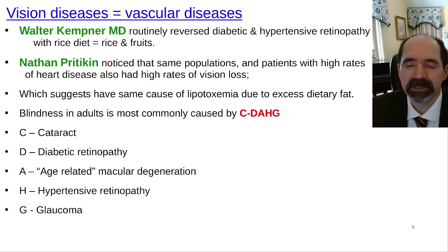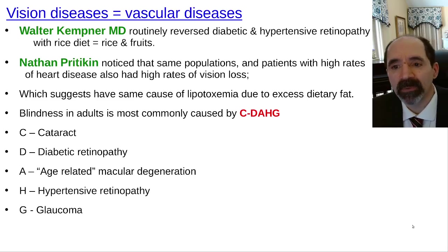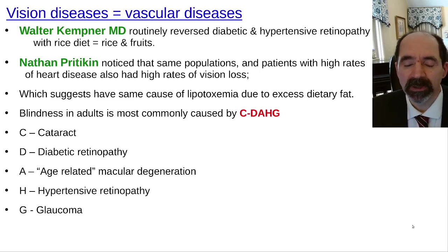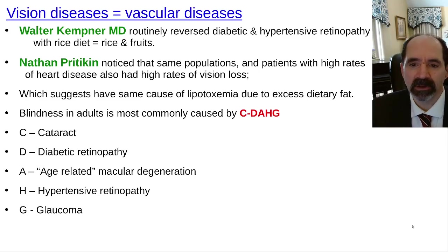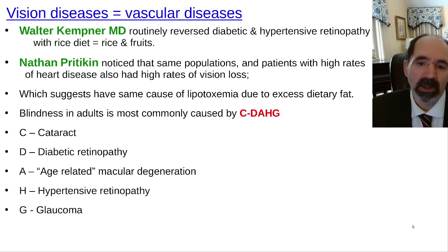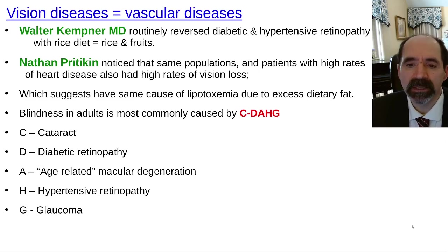Nathan Pritikin noticed that the same populations with high rates of heart disease also had high rates of vision loss. He felt this was primarily due to lipotoxemia — high dietary fat causing high blood lipid levels, causing ischemia and lack of blood flow to tissues. It would simultaneously cause high blood pressure as the heart pumps harder to try to ensure blood reaches the tissues.